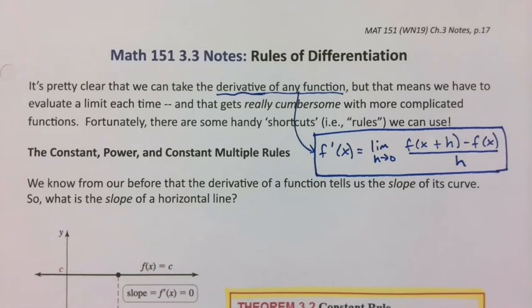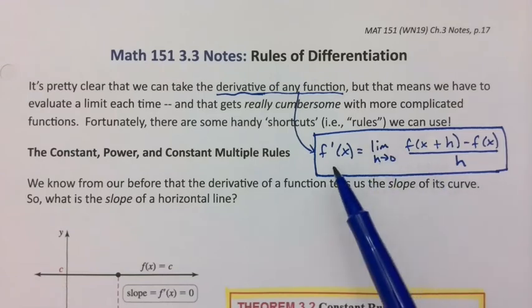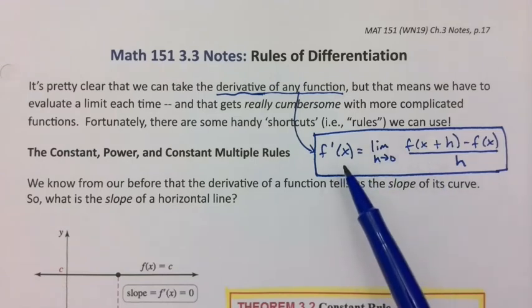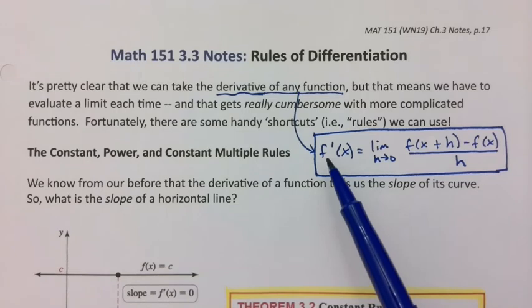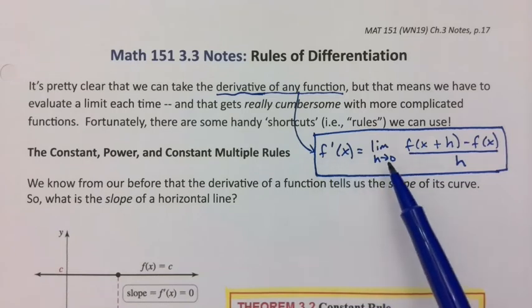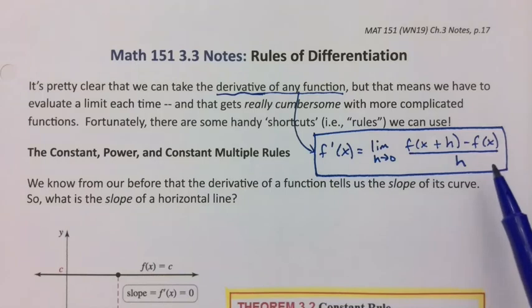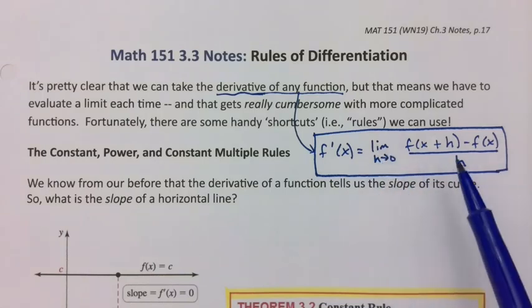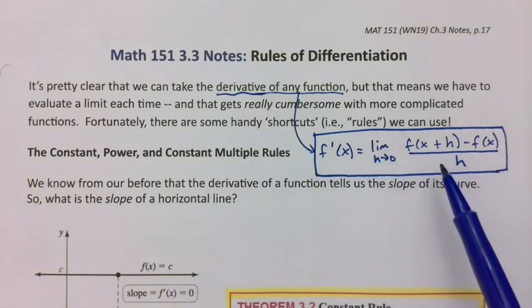In section 3.1, we learned the definition of a derivative, namely that it's the slope of a tangent line anywhere for any x value, and that's also equal to f prime of x, which is equal to the limit as h goes to 0 of f of x plus h minus f of x over h. This is called the limit of the difference quotient, and it's the definition of a derivative.